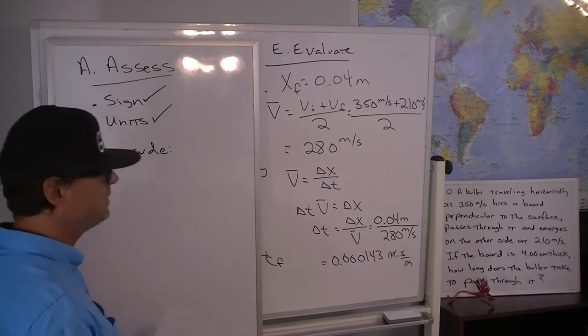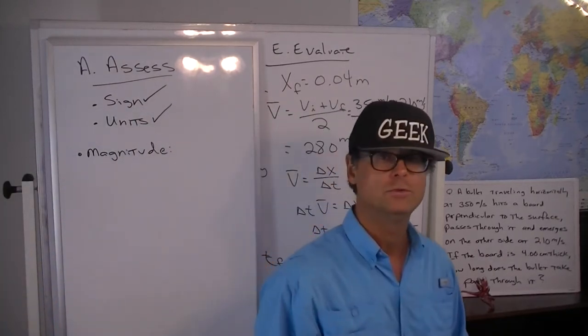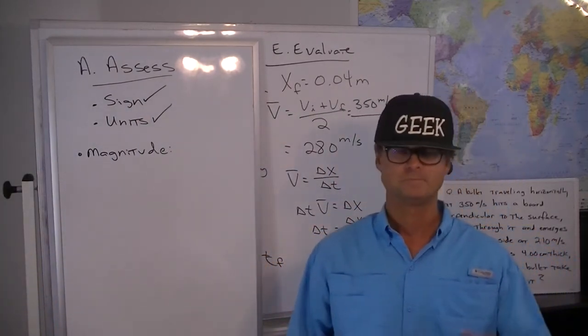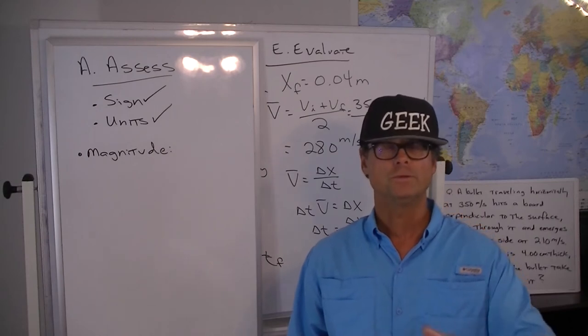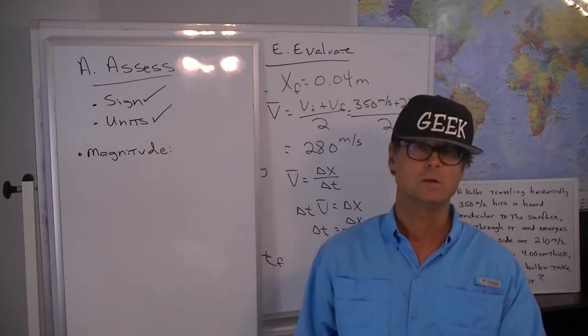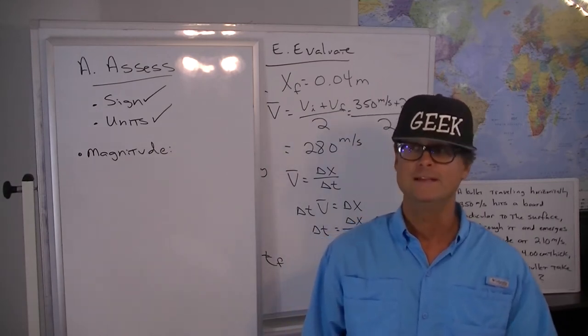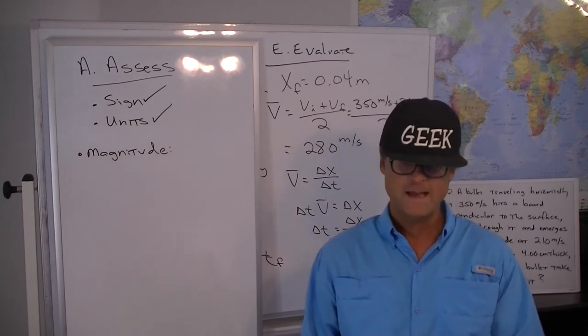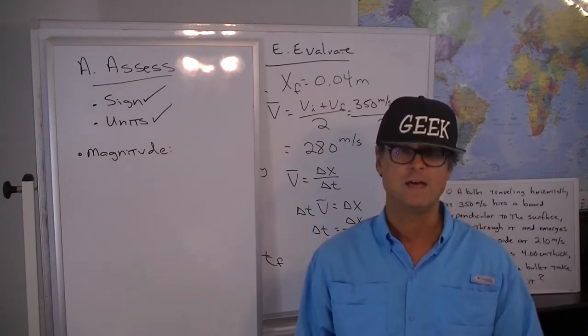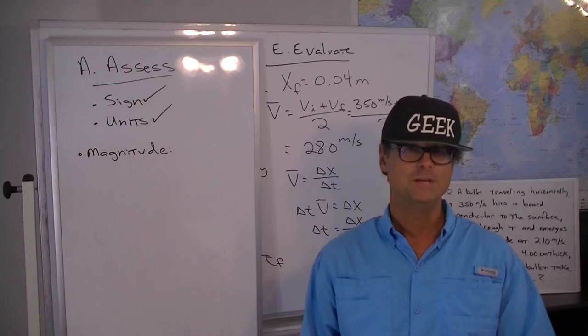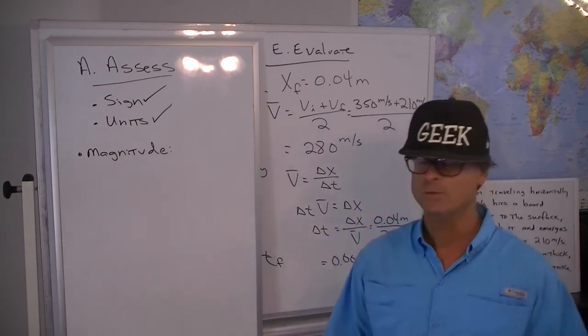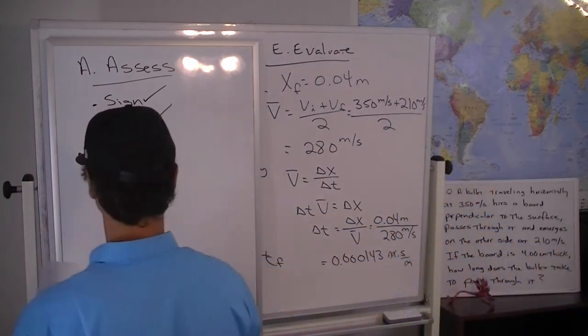And my strategy here to get a ballpark on the magnitude is simply the following: suppose the bullet didn't slow down at all. That would be an easy problem right? So if we find the time if the bullet didn't slow down at all that should be just a little bit faster than the time that we actually obtained as our answer.